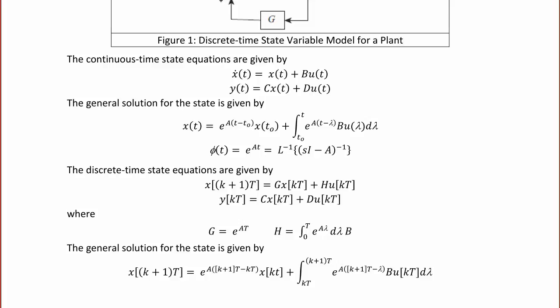The general solution for the states is now given by x of (k+1)T, which equals e to the A((k+1)T minus kT) times x of kT, plus the integral from kT to (k+1)T of e to the A((k+1)T minus lambda) times B times u of kT d-lambda.